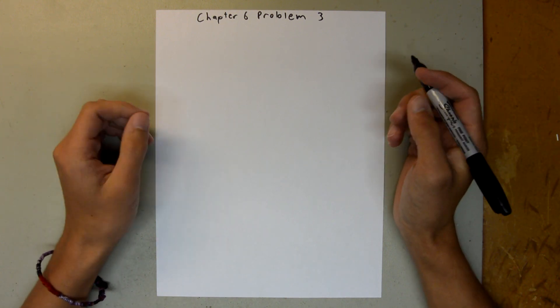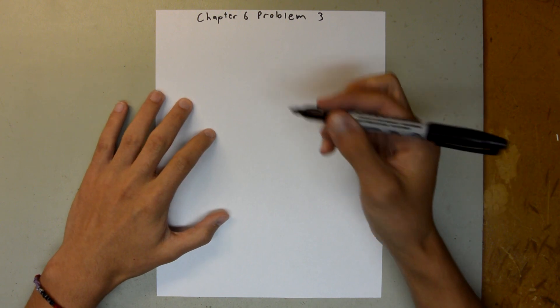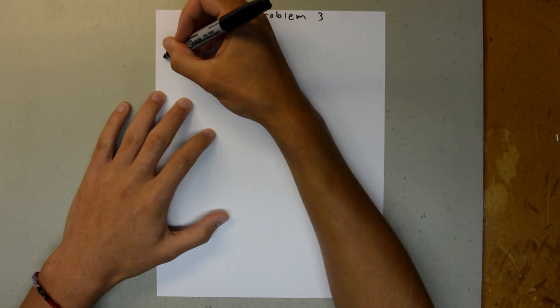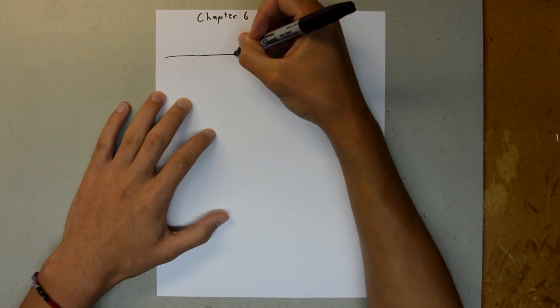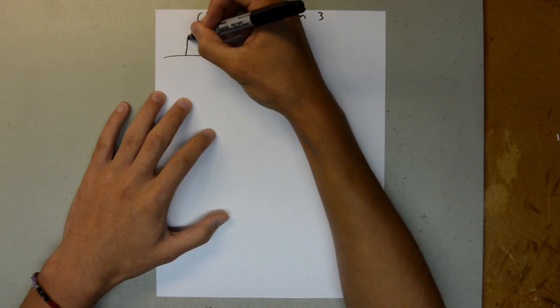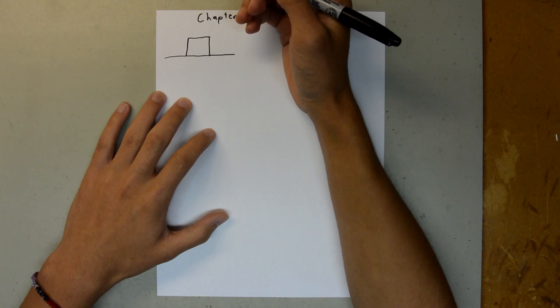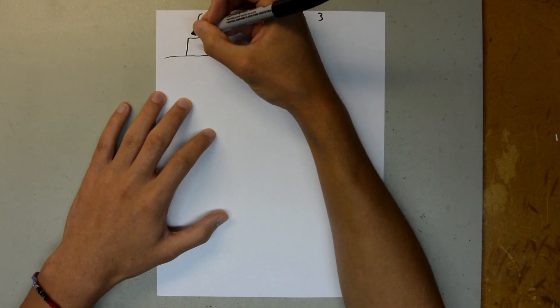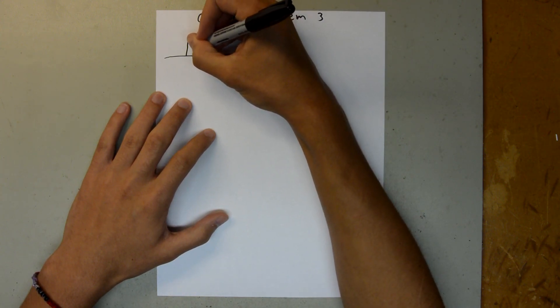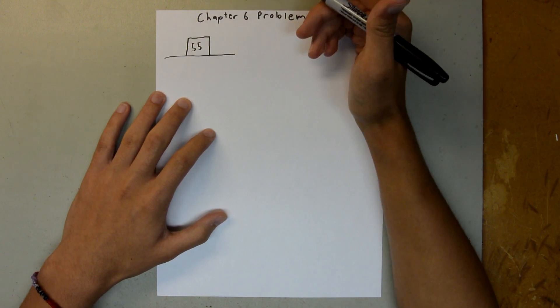So, the first thing you always want to do with these kinds of problems is draw a free body diagram. So, let's pretend that this is the horizontal surface. And here is our box, which we are told has a mass of 55 kilograms.